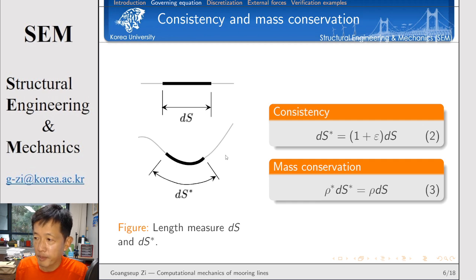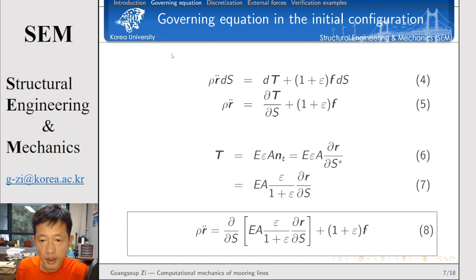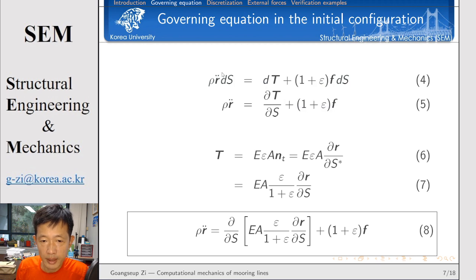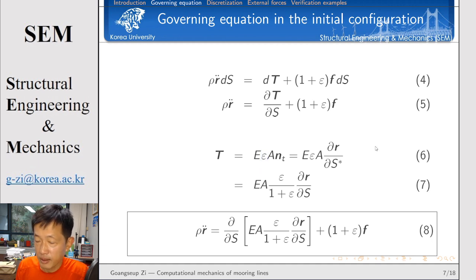Between these two segments there must be mass conservation too. Here rho stands for the mass density per unit length of the cable, so rho ds means the mass of this cable segment. Even if it is deformed to ds*, the mass should be the same. Considering the relation between ds before deformation and ds* after deformation, the force equilibrium can be changed, and we can cancel ds from both sides. The internal force is given by elastic modulus E times strain, multiplied by the cross-section area — this is Hooke's law for small strain.